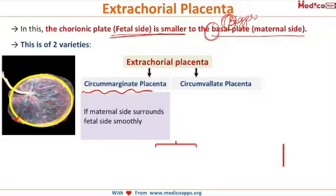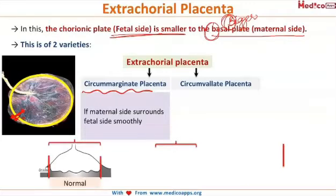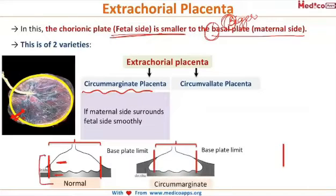In circummarginate placenta, the surrounding of the maternal side around the fetal side is very smooth. As seen in the diagram, the transition between the maternal side and the fetal side is very smooth. This is circummarginate placenta, where the maternal side is bigger but the transition remains smooth.